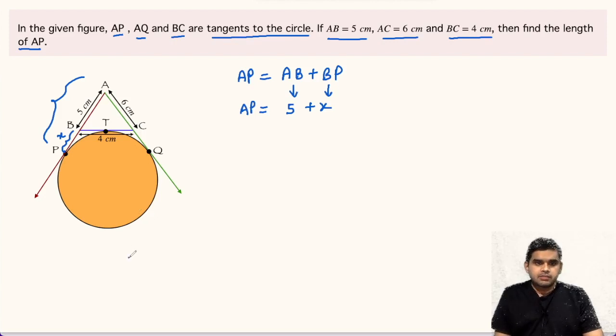Now, let us talk about the theorem related to tangent of a circle. If we have a circle and any external point, from this external point two tangents can be drawn to the circle. These are points of contact, then this theorem says that these two lengths are equal. Let us apply this theorem in our problem.